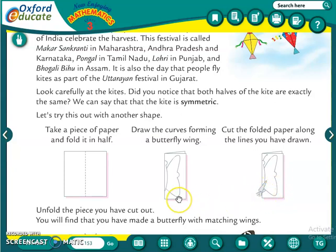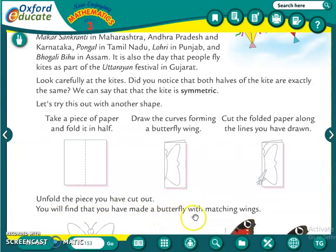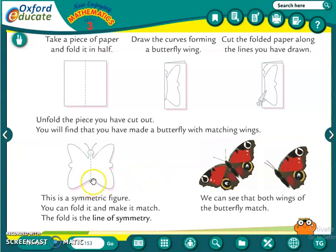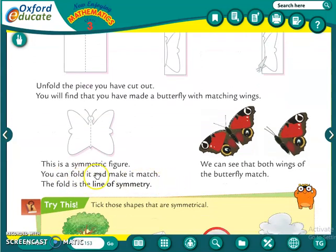You will find that you have made a butterfly with matching wings. You had drawn only one side, but the paper was folded and you cut the paper after drawing. When you unfold it, you can see the whole butterfly. Both sides are the same - this is a symmetric figure. You can fold it and make it match. The fold is the line of symmetry.